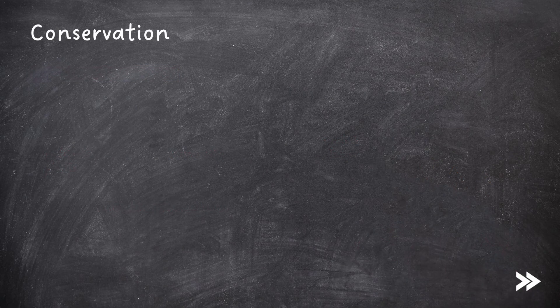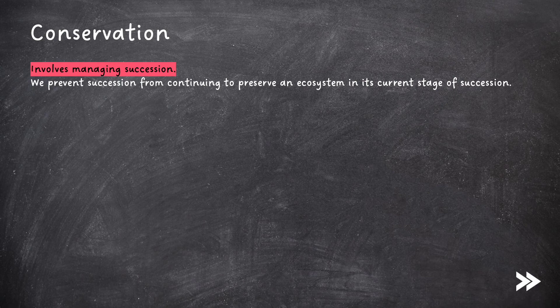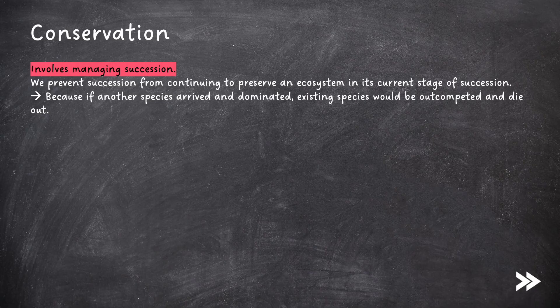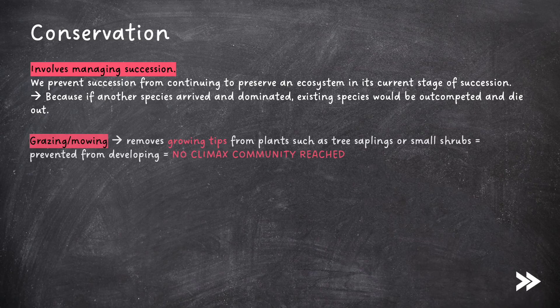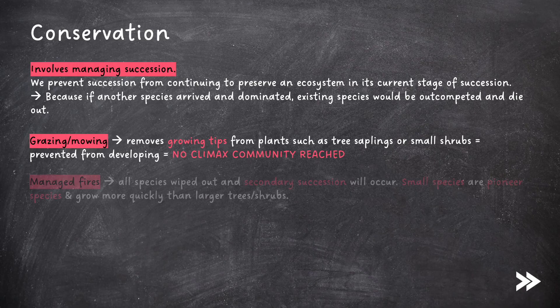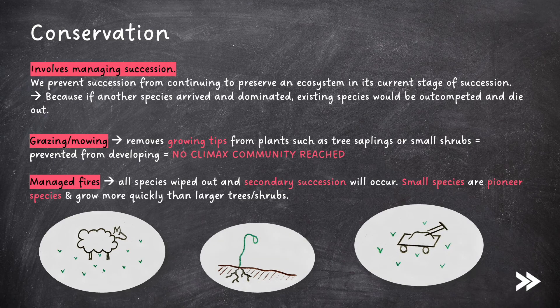Finally, we need to consider conservation, which involves managing succession. We prevent succession from continuing in order to preserve an ecosystem in its current stage, because if another species arrived and dominated, existing species would be out-competed and die out. Conservation methods include grazing and mowing, which removes growing tips from plants such as tree saplings or small shrubs, preventing them from developing so no climax community is reached. It can also be done through managed fires, where all species are wiped out and secondary succession occurs — small species act as pioneer species and grow more quickly than larger trees or shrubs.